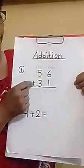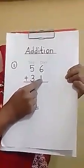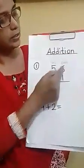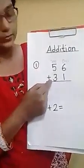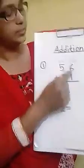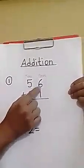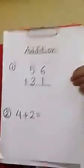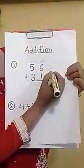Now, look at the sheet. There is number 1, 56 plus 31. We will add number 1. There are 2 rows. There is 1 row and there is another row, because there are 2 numbers. Now, first we will do 1's row. This row is 1's and this row is 10's. So, first we will add 1's row. So, first our number is 6.